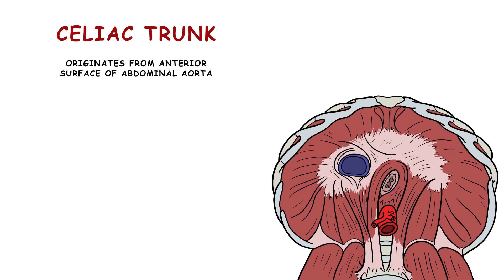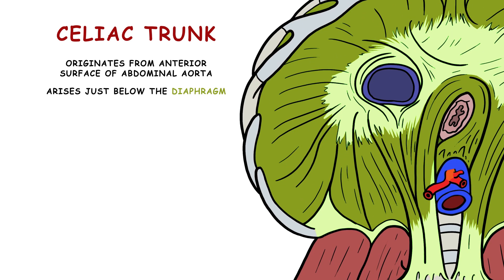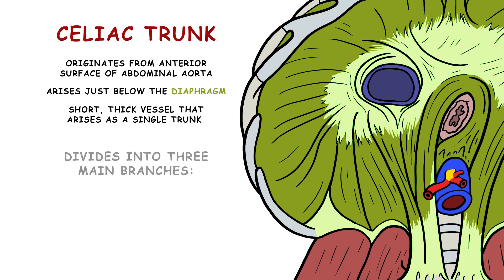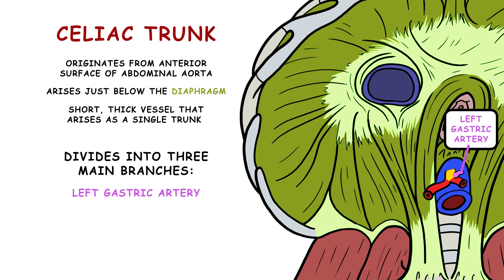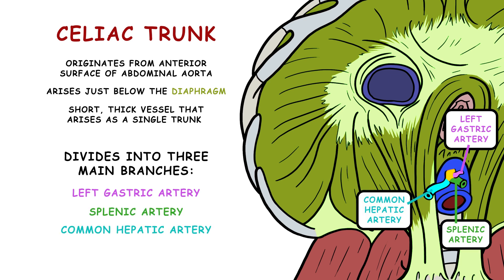Originating from the anterior surface of the abdominal aorta, just below the diaphragm, the celiac trunk is a short, thick vessel that arises as a single trunk before dividing into three main branches – the left gastric artery, the splenic artery, and the common hepatic artery. Each of these branches further divides into smaller vessels, forming an extensive network of blood supply within the abdominal cavity.